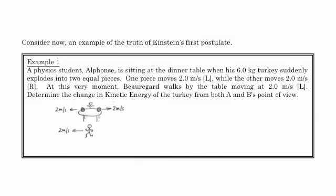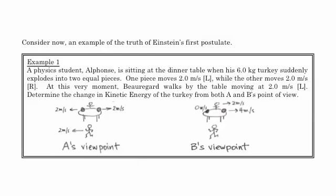Here's a diagram of what's going on — Alphonse sitting at the table, and Beauregard walking by. This would be Alphonse's point of view, his frame of reference. In Beauregard's frame of reference, though, he's not really walking — he sees everything else moving by him. Alphonse, the table, and the ground are going to the right at two meters per second. The first piece of turkey, which was moving two meters per second to the left, is now moving at the same speed as Beauregard, so he sees that first piece of turkey not moving at all.